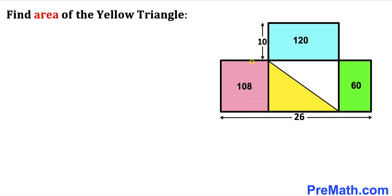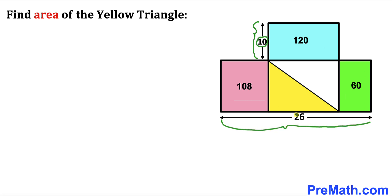Welcome to pre-math. In this video we have got a bunch of rectangles in a composite shape. The area of the blue rectangle is 120 centimeters square, the area of the pink rectangle is 108 centimeters square, and the area of the green rectangle is 60 centimeters square. The side length of the blue rectangle is 10 centimeters, and the horizontal side length is 26 centimeters. Our task is to calculate the area of the yellow triangle.